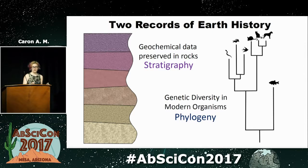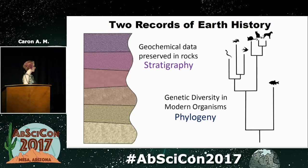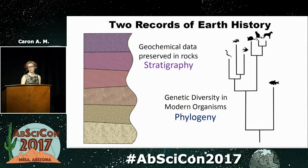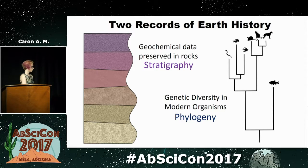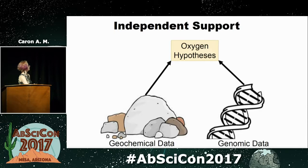There are two records of the history of life on Earth. There's this geochemical record that we just heard about — isotopes preserved that you can look at, how they change over time through the stratigraphy. But there's also this totally separate record preserved in the genetic diversity in modern organisms. You can look at what genes they have and when they evolved different pathways to use different things in the atmosphere. And our idea was: can we take this genomic data and use it as a totally independent test for these oxygen hypotheses?